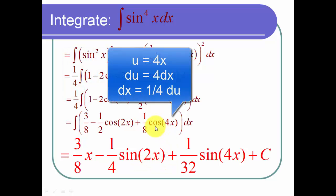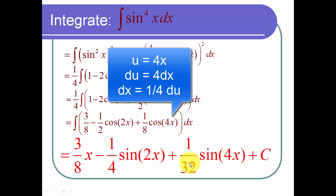Similarly, to integrate the cosine of 4x, I use u-substitution again. This time I let u equal 4x, so du equals 4 dx and dx equals one fourth du. And one fourth times one eighth is one thirty-second.